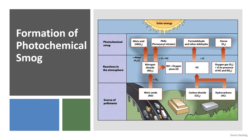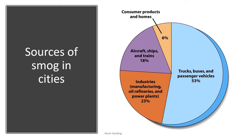The photochemical smog starts with sources at ground level — NOx, CO2, and hydrocarbons — which react in the atmosphere. Please pause to look at the specific chemical reactions on the slide. In the city, smog is primarily caused by trucks, buses, and passenger vehicles in the transport sector, as well as industries.